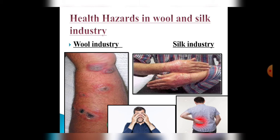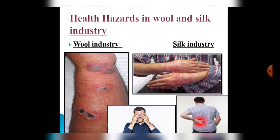The people who work in these industries for their livelihood become witness to health hazards. In the wool industry, workers get infected by a bacterium called anthrax, and they also face some blood-related problems. In silk industries, when cocoons are put in hot water, workers get blisters on their bare hands, and they have to stand continuously for 12 to 16 hours, resulting in back ache, spine problems, and vision problems. With these two topics we have completed our chapter Fiber to Fabric.